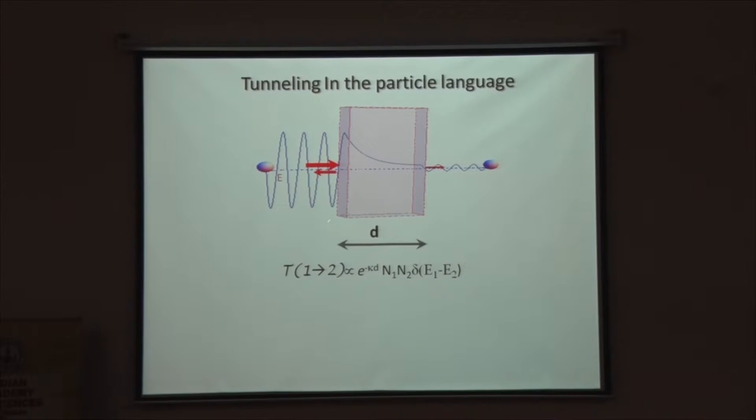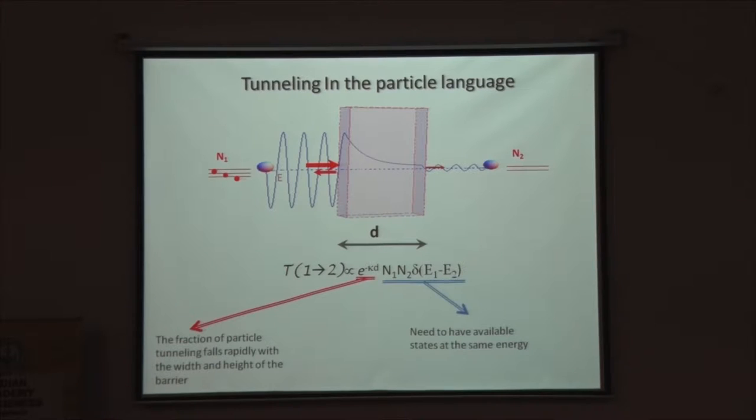This tunneling process is exponentially reduced. The probability of finding the particle on the other side is exponentially decaying with the thickness of this barrier. And it also depends on the number of available particles on this side and the number of available empty states at the same energy on the other side. This is all encoded in this formula, which is the tunneling matrix, essentially the tunneling probability of an electron tunneling from this side to the other.